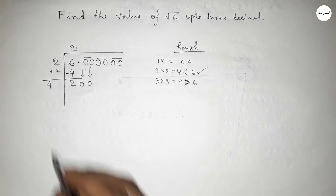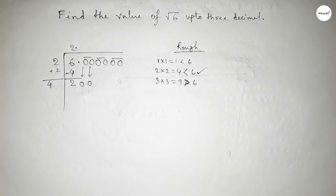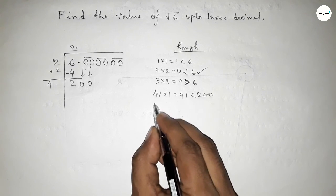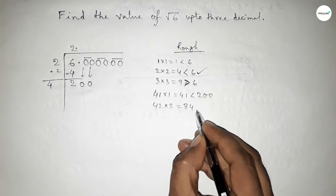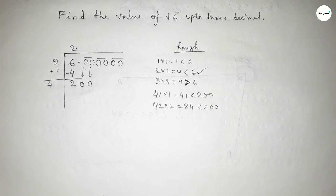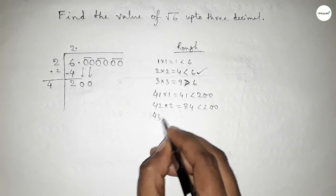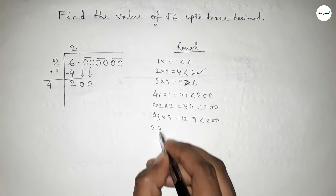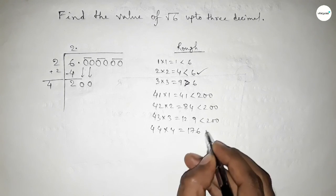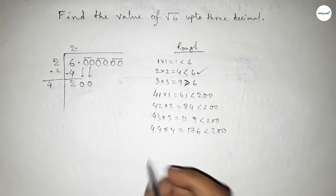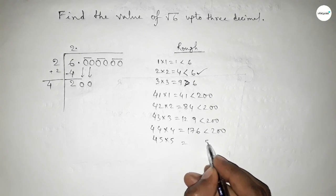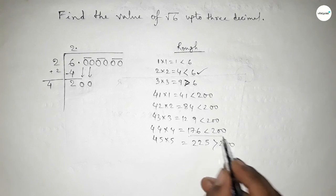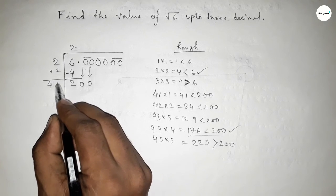Now what should be put here beside 4, multiplying that number which is less than 200. If we put here 1, multiplying 1 which is less than 200. If we put here 2, so 42×2=84 which is less than 200. If we put here 4, so 44×4=176 which is less than 200. If we put here 5, so 45×5=225 which is greater than 200. So we should take here 4, so we put here 4.